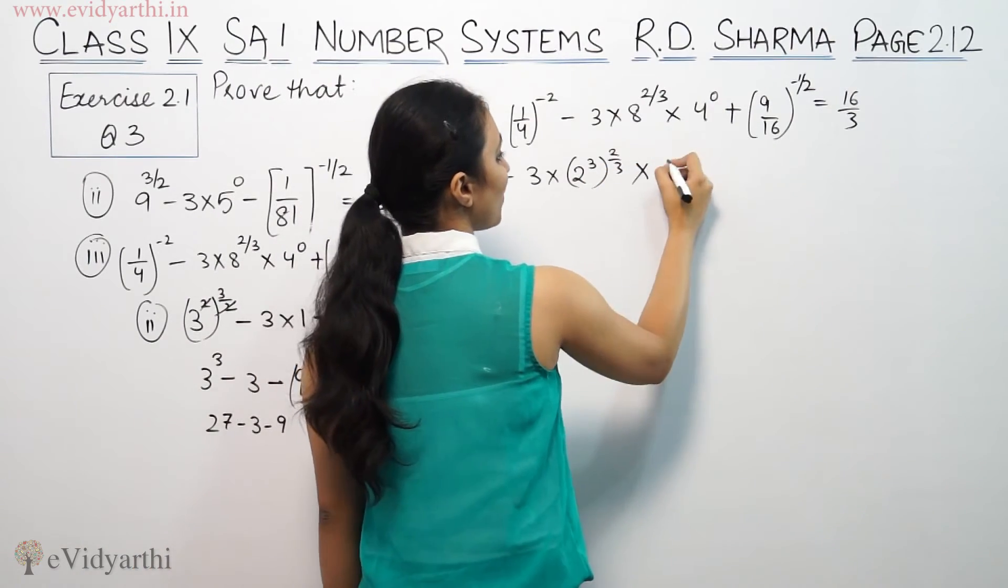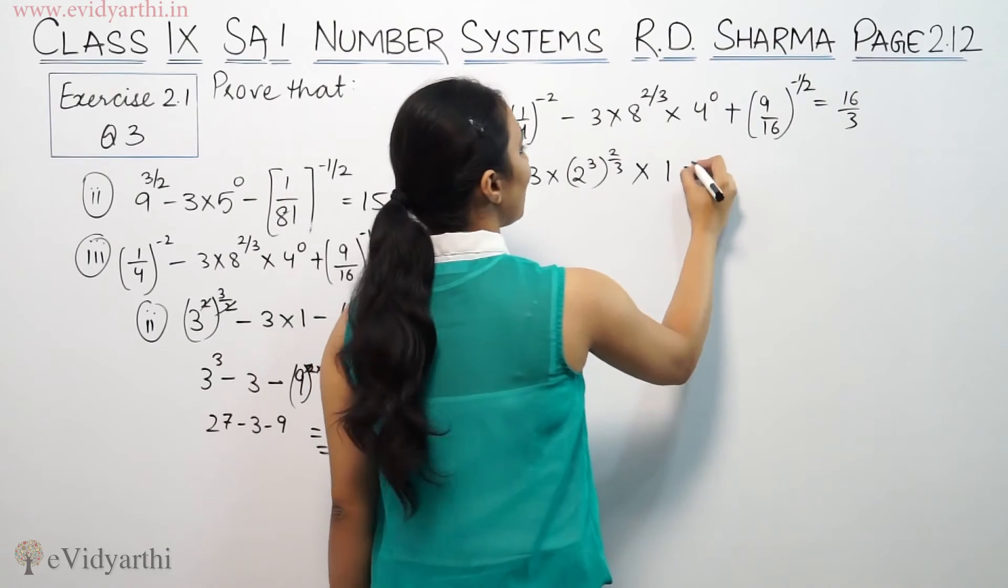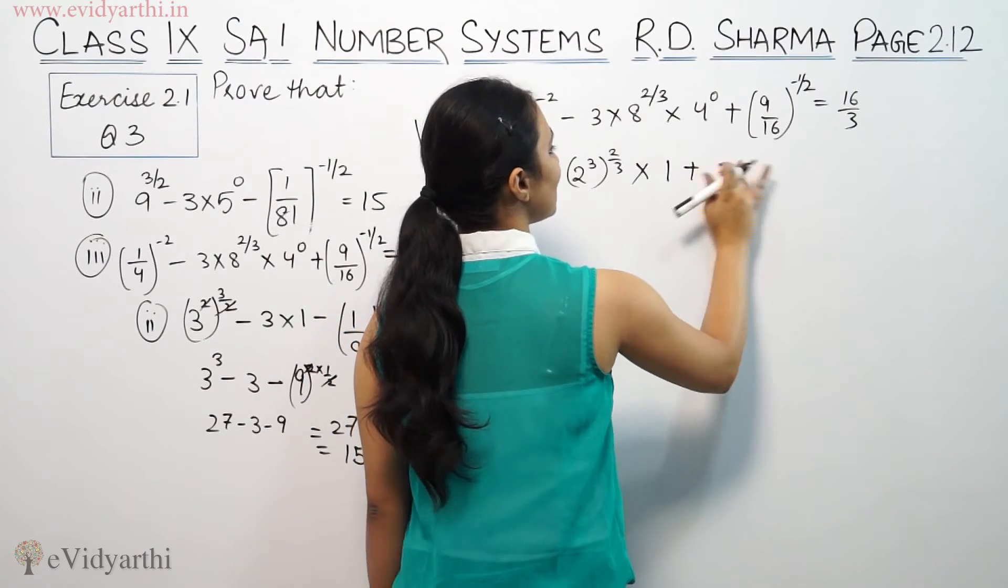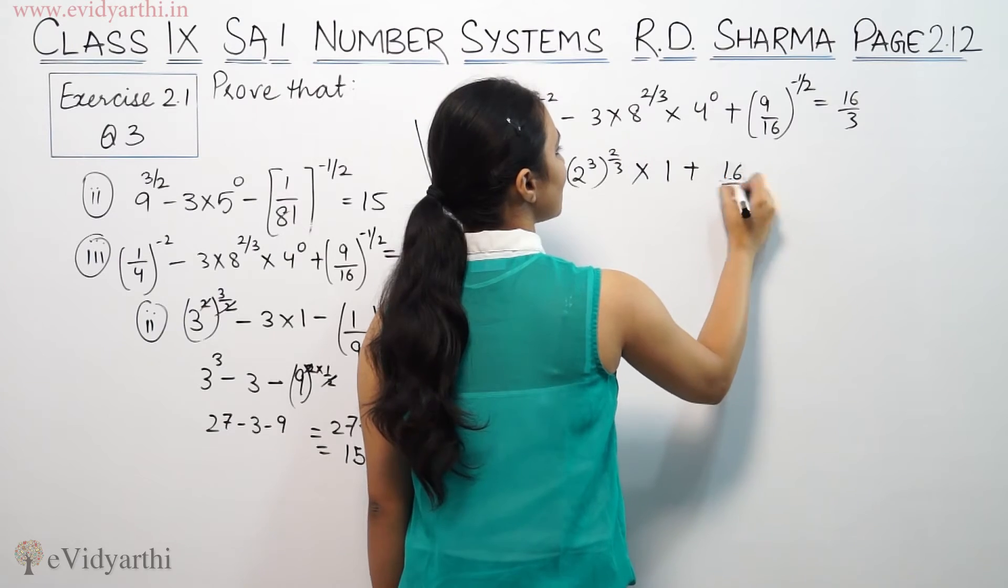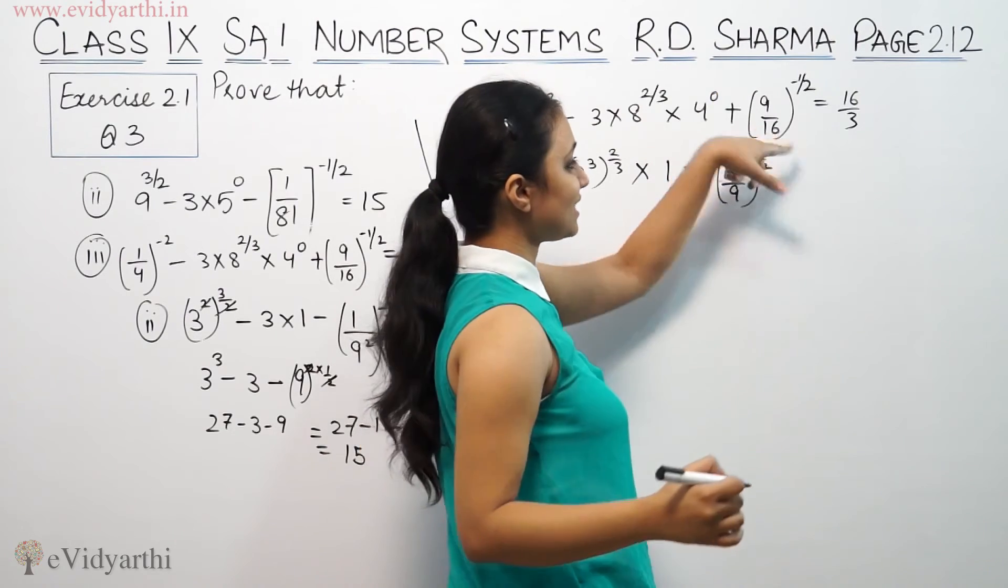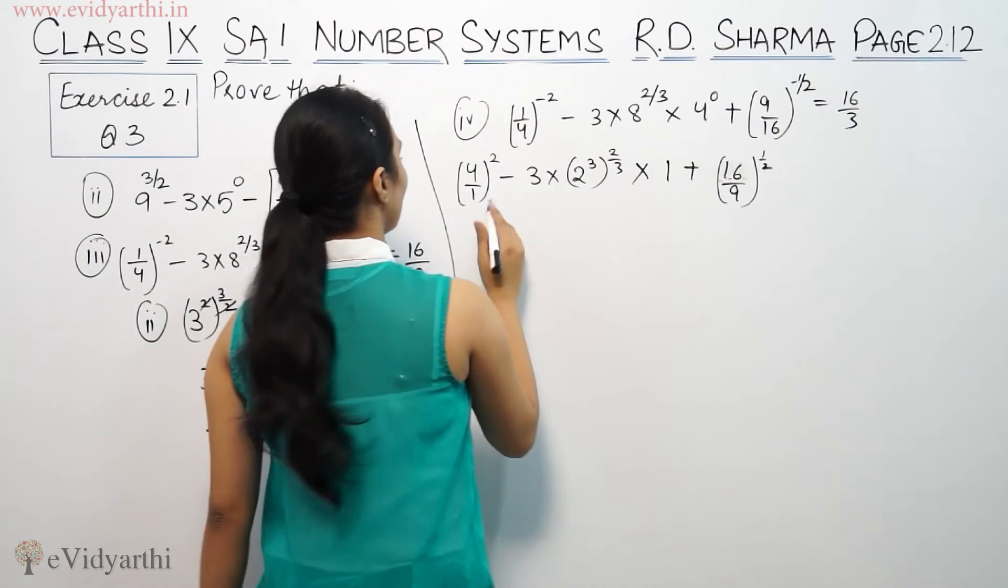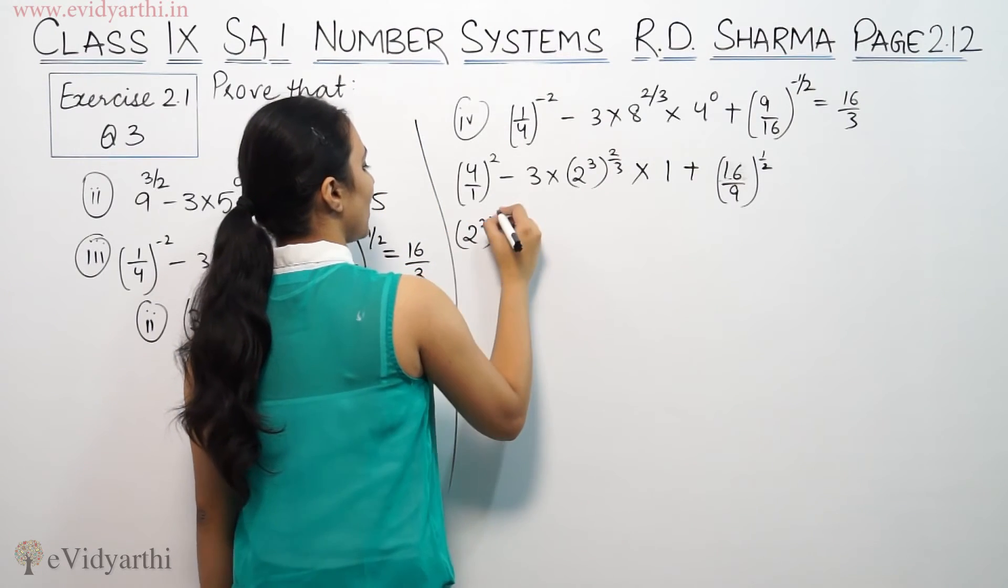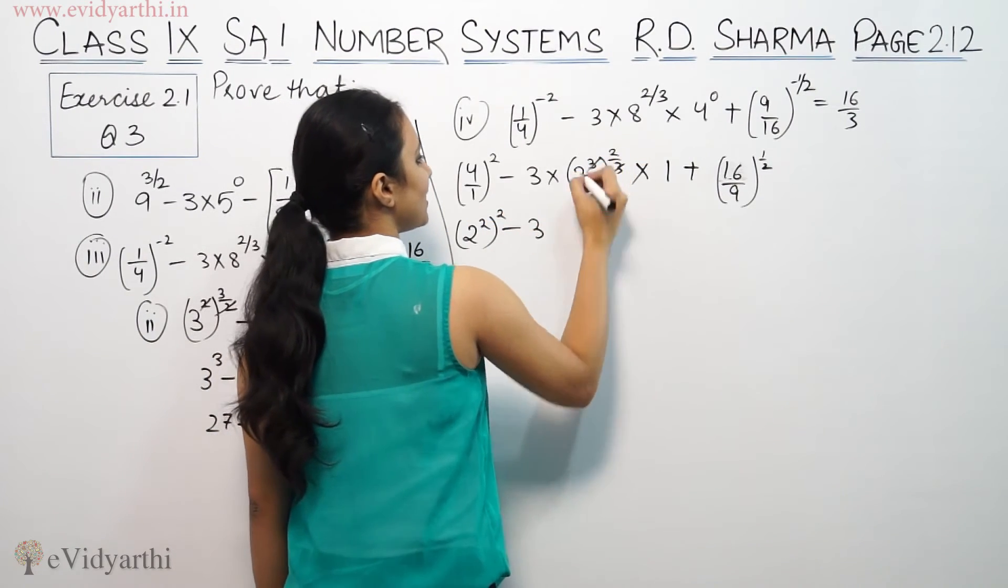Into something raised to the power 0 is 1 plus 9. It's reciprocal. 16 by 9 to the power 1/2. 4 squared means 2 squared into 2. So we cancel.